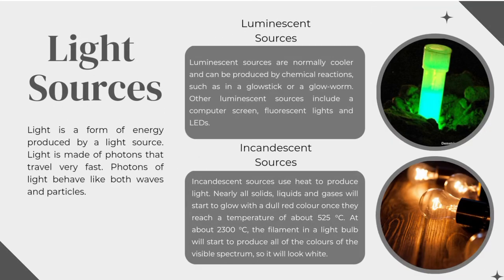Light Sources. Light is a form of energy produced by a light source. Light is made of photons that travel very fast. Photons of light behave like both waves and particles. Luminescent sources are normally cooler and can be produced by chemical reactions, such as in a glow stick or a glow worm. Other luminescent sources include a computer screen, fluorescent lights, and LEDs.